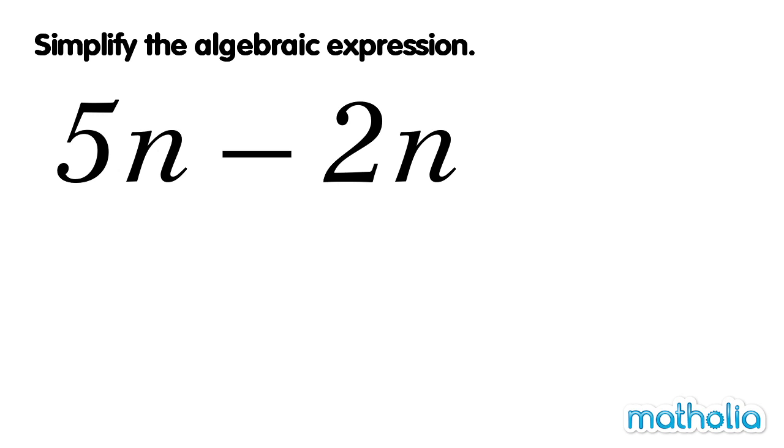Let's simplify 5n minus 2n. This expression also has two terms. Both of the terms have n. To simplify, we subtract 2n from 5n. 5n minus 2n equals 3n. We have simplified the expression.